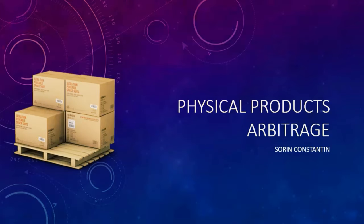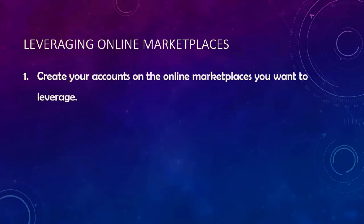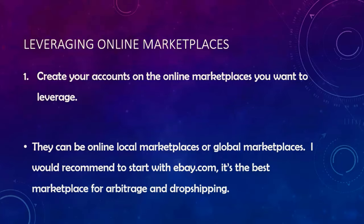Welcome back. We've talked about arbitrage in general, physical products arbitrage, and how to leverage online marketplaces. Now let's talk about the step-by-step process to actually leverage online marketplaces. The first step is to create your accounts on the online marketplaces you want to leverage. These can be local marketplaces in your country or global ones like Amazon, eBay, or AliExpress. I would recommend starting with eBay.com — it's the best marketplace for arbitrage and drop shipping at a global level right now.